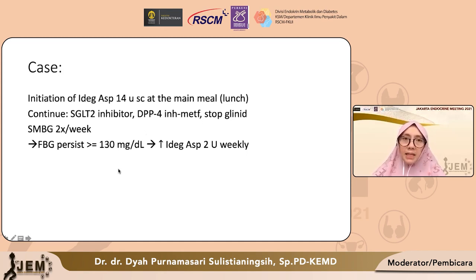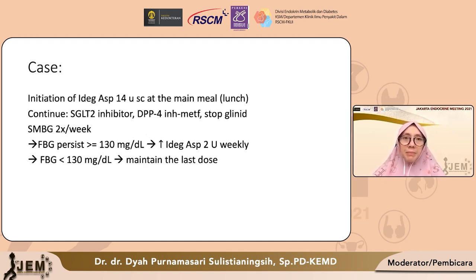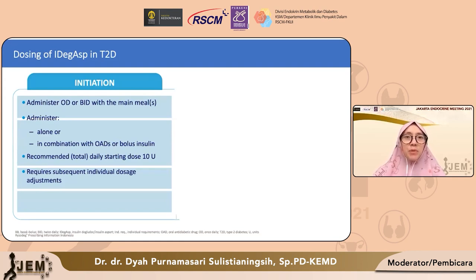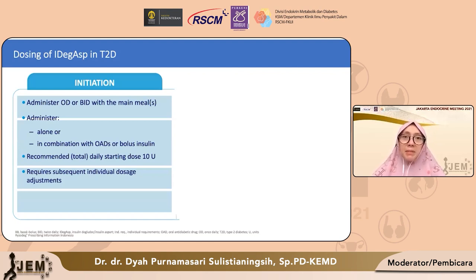Titrasi dilakukan dengan berpedoman pada target fasting glukosa darah kurang dari 130. Bila gula darah puasanya masih di atas 130, maka insulin IDeg-Aspart bisa dinaikkan 2 unit setiap minggu. Namun apabila sudah mencapai kurang dari 130, maka dipertahankan pada dosis yang terakhir. Dosis awal adalah 10 unit, namun bisa lebih tinggi pada pasien-pasien dengan baseline gula darah yang memang cukup tinggi.